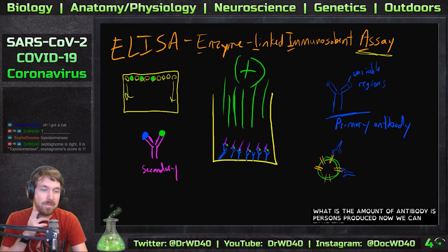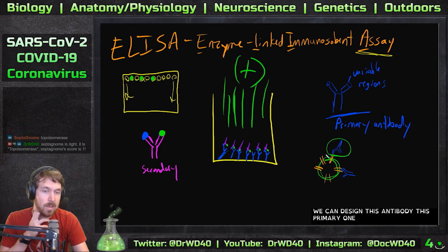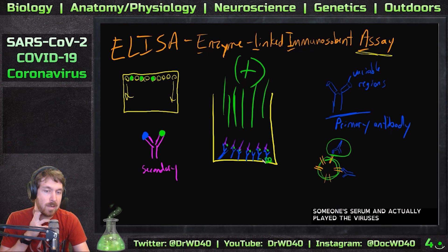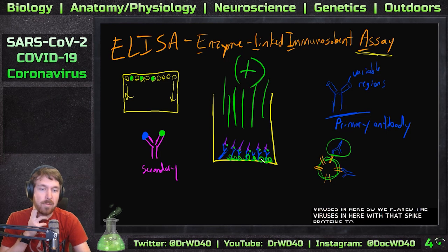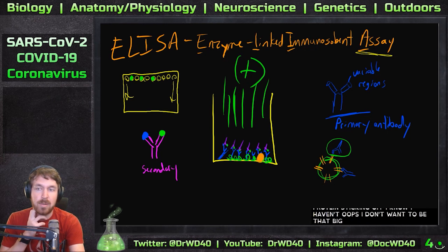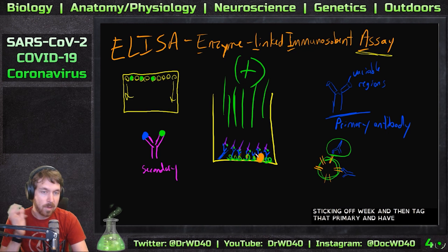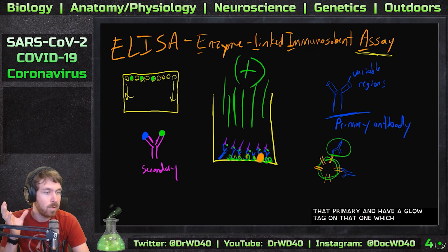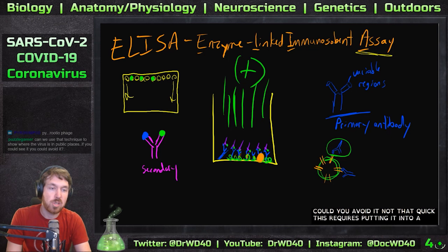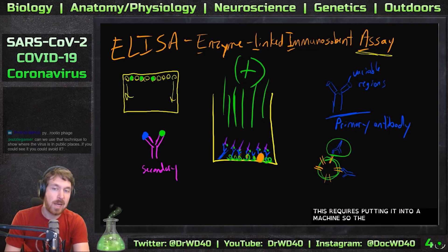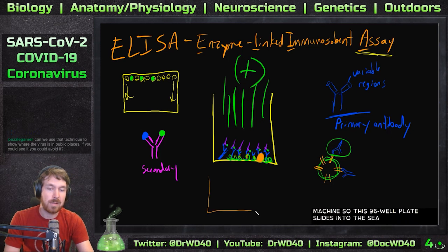We could take this one step further: instead of serum, we plate the actual viruses in here with the spike protein sticking off. We then tag the primary antibody and have a glow tag on it as well, which would be really cool.